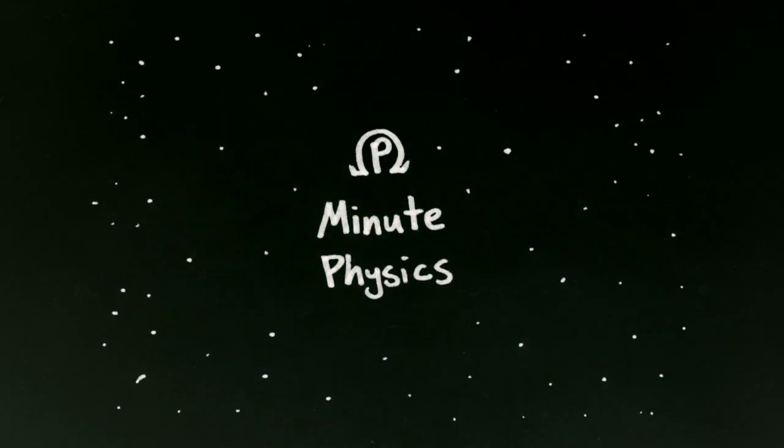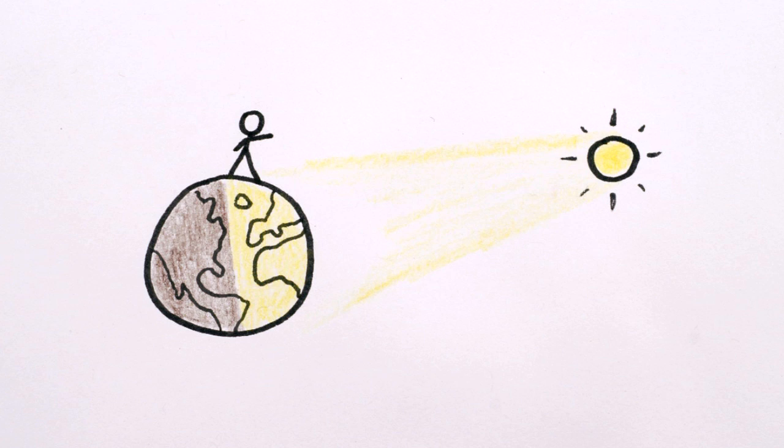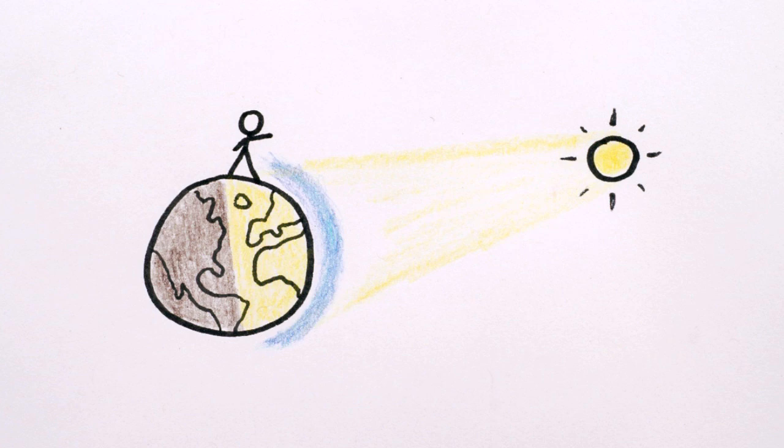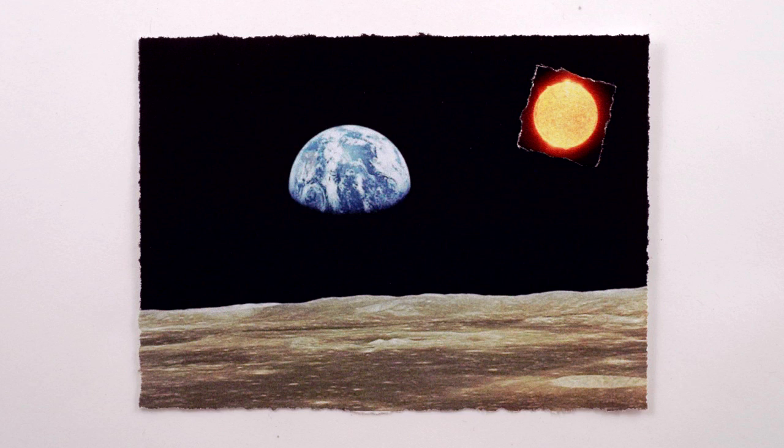Why is the sky dark at night? You might think the answer is obvious. The sun isn't up. But the only reason the sky looks blue during the day is that sunlight scatters off of the atmosphere. If we didn't have an atmosphere, like on the moon, the sky would always be dark, even when the sun is shining.